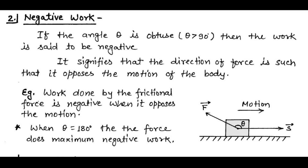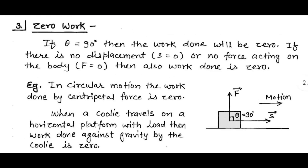For negative work done: if the angle is obtuse, the work is said to be negative. This means the force opposes the motion of the body. For example, frictional force opposes motion, so work done by friction is negative; the frictional force and applied force act in opposite directions, making theta equal to 180 degrees — at which point the force does maximum negative work. For zero work done, as in circular motion, the work done by centripetal force is zero. Similarly, when a porter walks horizontally with a load on his head, work done against gravity is zero because the angle between force and displacement is 90 degrees.